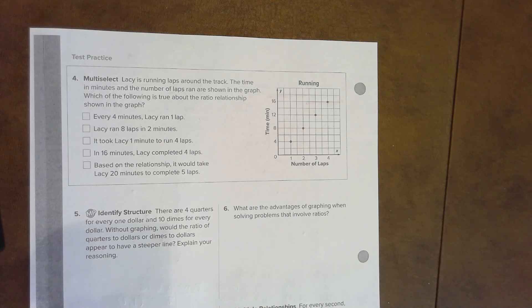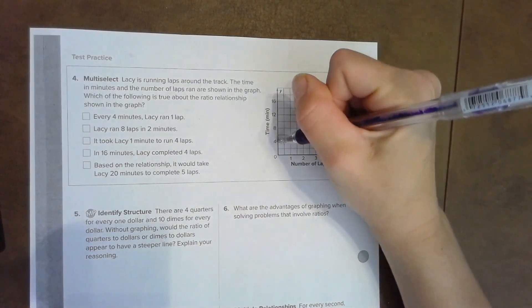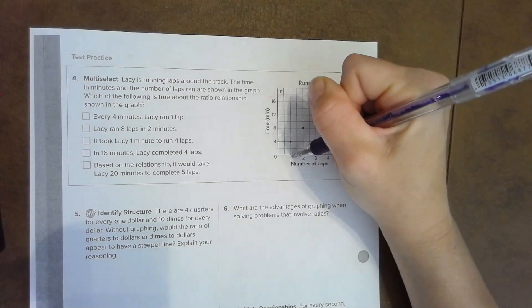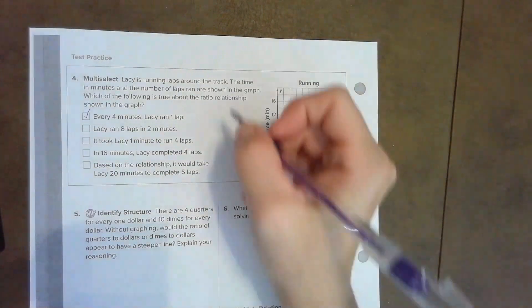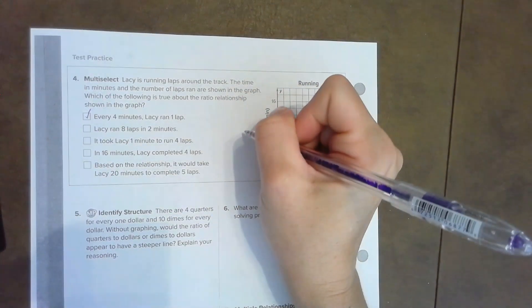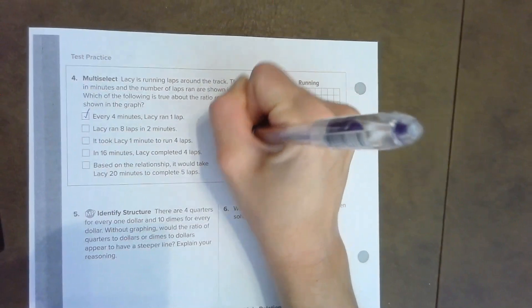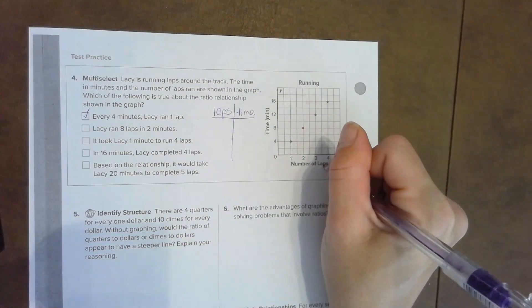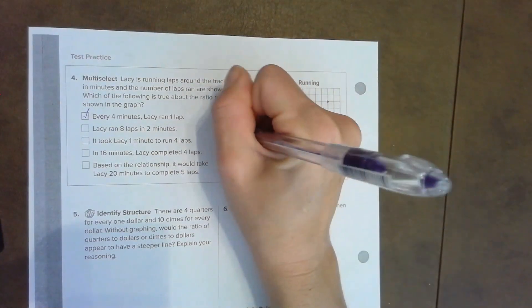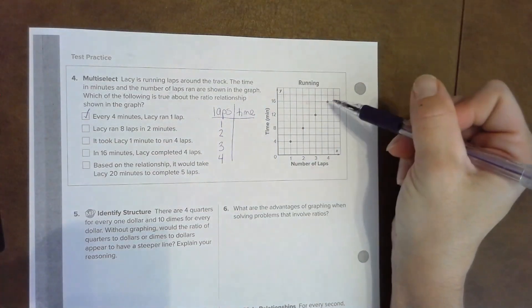Every four minutes, Lacey ran one lap. So I'm going to go over here, find four minutes—did she run one lap? Yep, that is true, so I'm going to check it off. If I want to, I can even write a little ratio table over here, and that might help me. Let's do that. Laps, time. Number of laps goes one, two, three, four, and the time goes four, eight, twelve, sixteen.